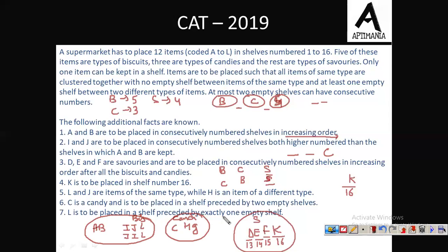N is to be placed in a shell preceded by exactly one empty shell — so there must be one empty shelf before N. Now, simply pause the video and try to solve the set on your own.